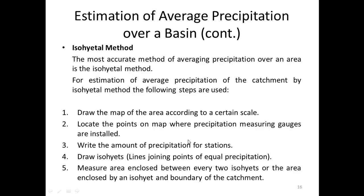The next method used for estimation of average precipitation over a basin is the Isohyetal Method. The most accurate method of averaging precipitation over an area is the Isohyetal Method.